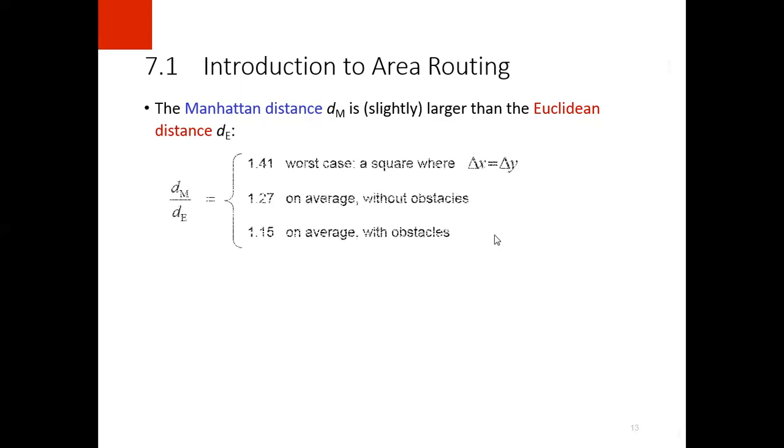The Manhattan distance is slightly larger than the Euclidean distance, and Euclidean paths are usually the shorter paths. There can be a minimum ratio of 1.15 to a worst case ratio of 1.41.